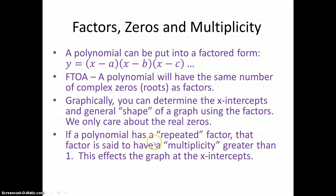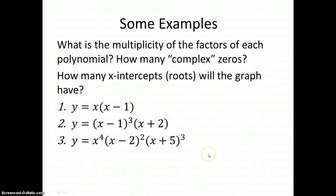If a polynomial has a repeated factor, then that factor is said to have a multiplicity that's greater than one, and this affects the x-intercepts and how many x-intercepts we have. Now, I'm going to show you some examples right now about what is multiplicity.